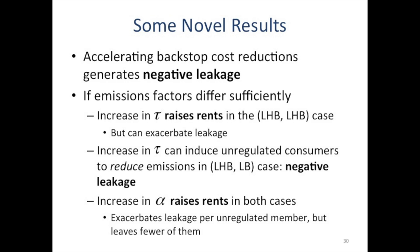Here we have the unregulated and the regulated consumer. The unregulated always goes from low to high to backstop. If the regulated consumers are going straight from the low cost pool to the backstop, you can get negative leakage. Increasing the tax makes the regulated consumers switch earlier to the backstop, which decreases their cumulative demand for the lower emissions pool. The unregulated then consume from that pool longer before switching to the high cost pool, and they always switch out of the high cost pool at the same time because that's determined by when it hits the backstop price. So they consume for a shorter time on the relatively more emissions intensive pool.